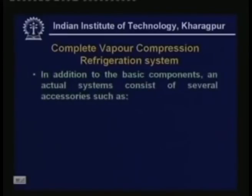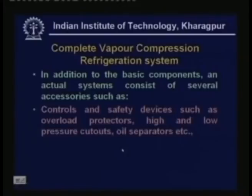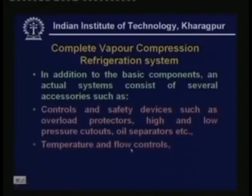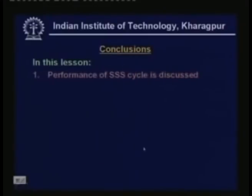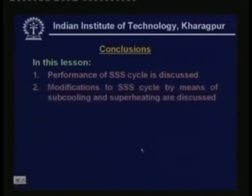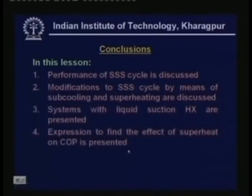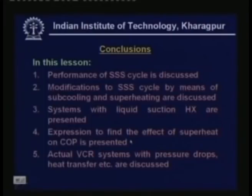A complete vapor compression refrigeration system consists of basic components plus several accessories including controls and safety devices such as overload protectors, high and low pressure cutouts, oil separators, temperature and flow controls, filters, dryers, and valves. In summary, this lesson covered: performance of SSS cycle, modifications by sub-cooling and super-heating, liquid suction heat exchanger, criteria for beneficial effect of super-heat, and effect of pressure drops in actual systems. In the next lesson we will discuss multistage and cascade cycles used in very large temperature lift applications.